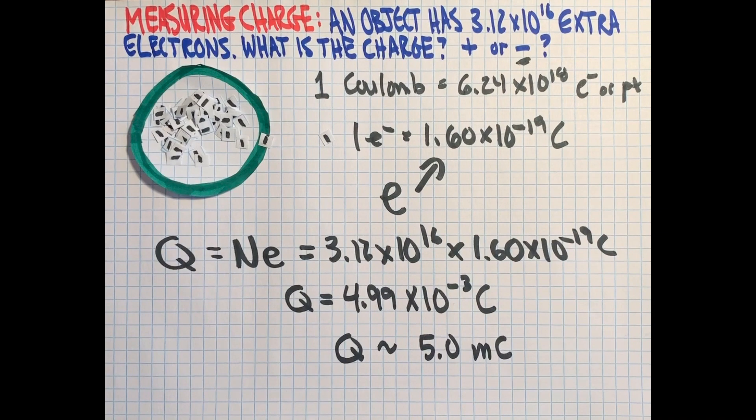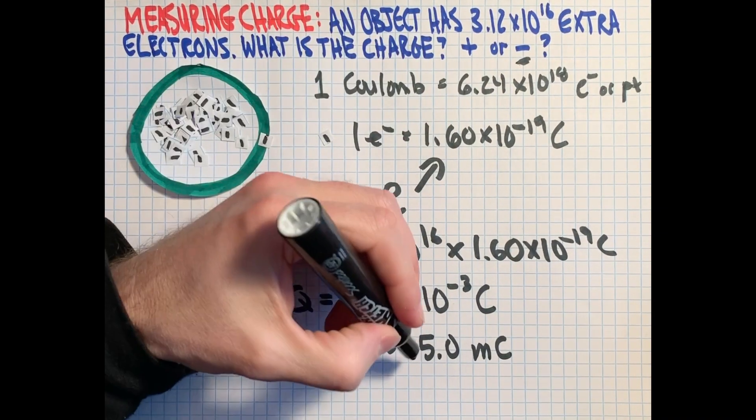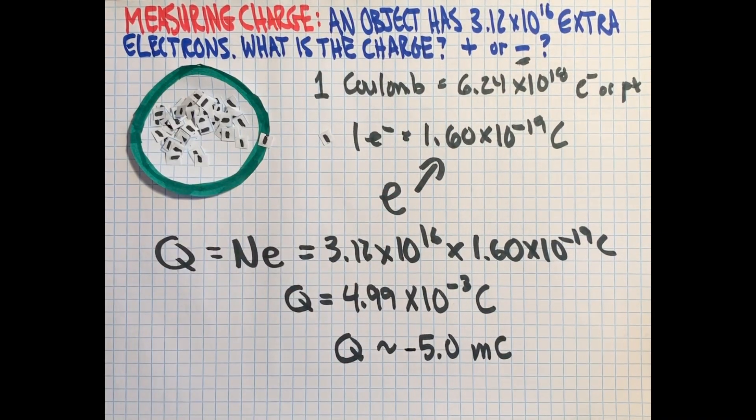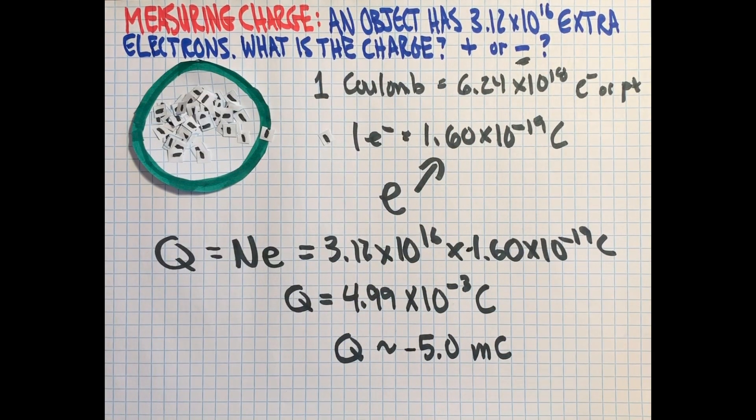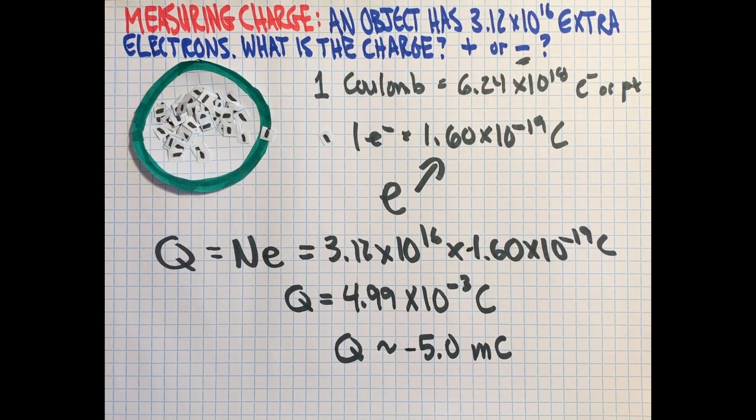And because we know this was negative because of these electrons, we can just put a little negative sign there, like there. We could have put it here too as well when we started. But this is one where you really just have to know what the charge is on electrons, that they're negative, and that when you have a lack of electrons, that the charge will be positive.